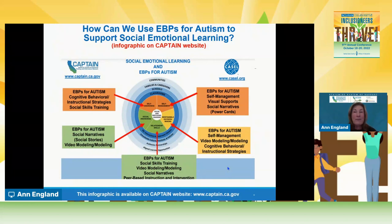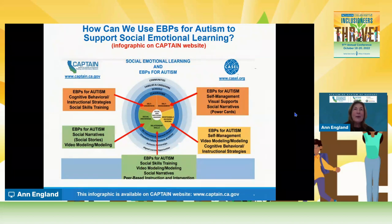We made an infographic where we took that CASEL 5 diagram and with each competency said: these are the evidence-based practices for autism that will support self-awareness, these are the EBPs that will support social awareness, these are the EBPs that will support relationship skills, and so on. So as you go in and say, 'I have a student with autism who's participating in his SEL curriculum,' these are the EBPs that can be helpful to increase equity and access to that same curriculum and benefit from it.